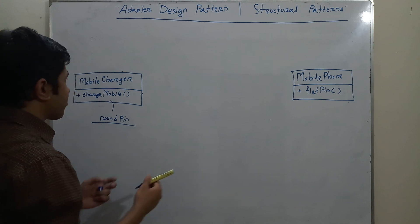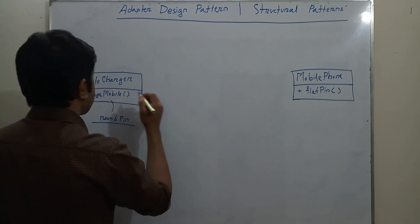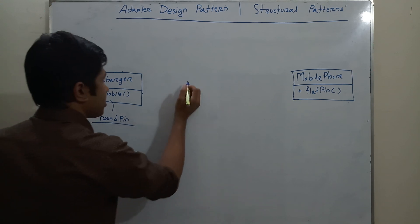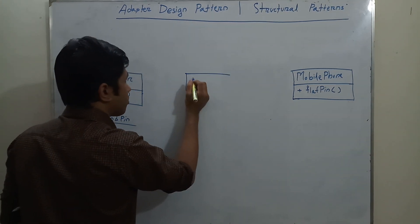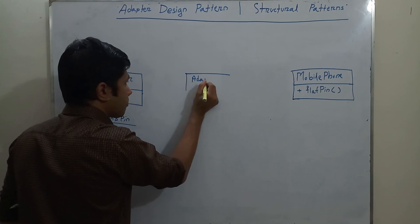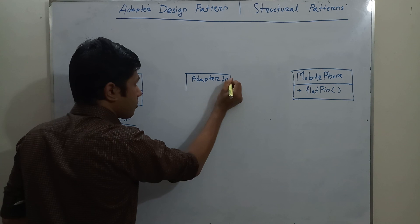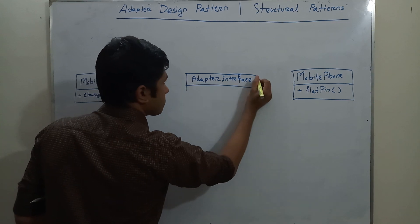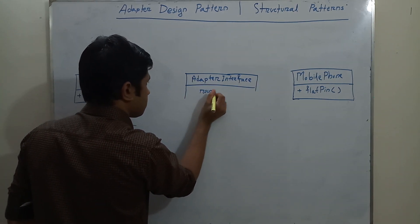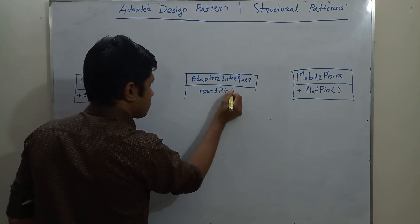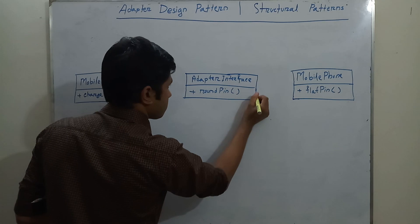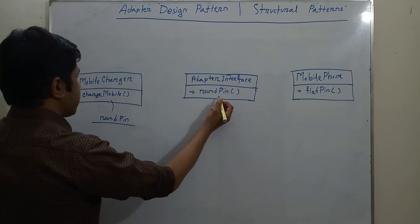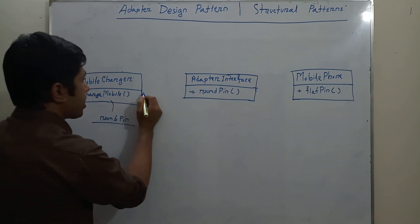Since the charger is a round pin, I can't use the round pin mobile charger to charge the flat pin mobile phone. So here I need an adapter. First, we will introduce an interface of the adapter so that we can connect with the interface using the round pin charger. Here the adapter interface is a round pin and our mobile charger is also a round pin, so we can access the adapter.